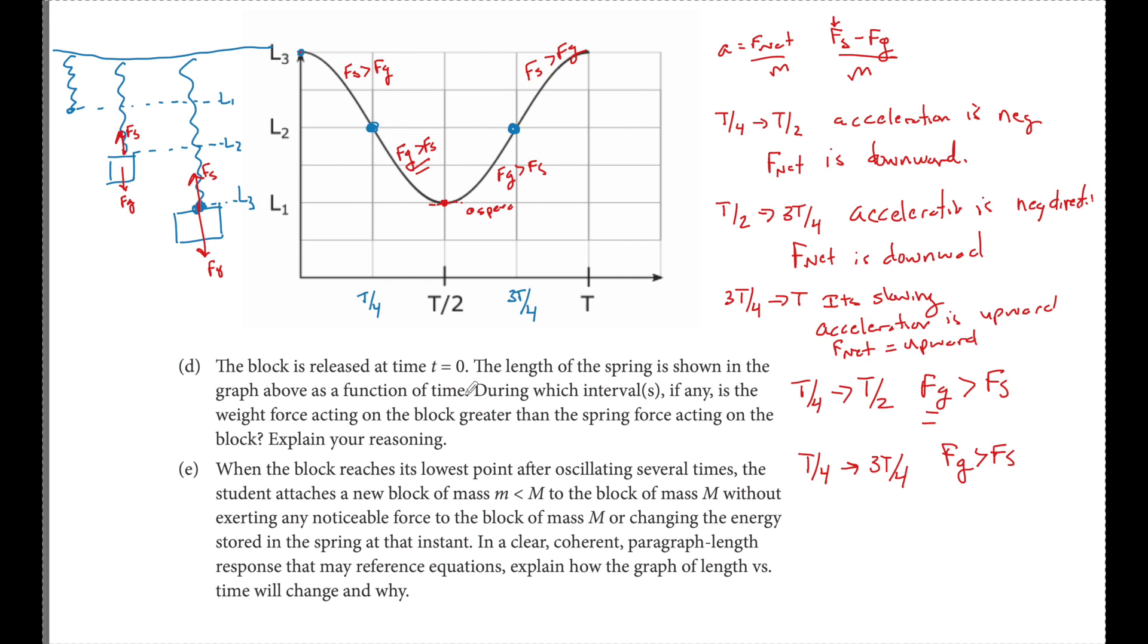So to summarize this, during which intervals, if any, is the weight force acting greater than the spring force from T4 or from L2 up to L1 back to L2, FG is going to be greater than FS. And my reasoning for that is going to be because the acceleration is in the downward direction. Therefore, F net is in the downward direction. And in this case, on the block, the downward force, which would supply that downward F net is FG.